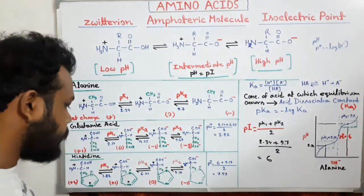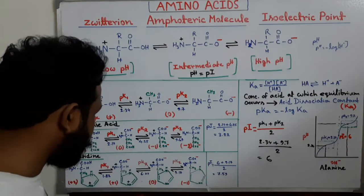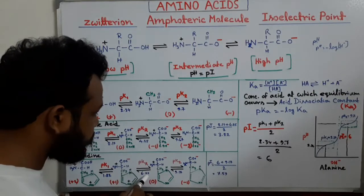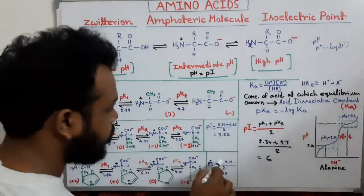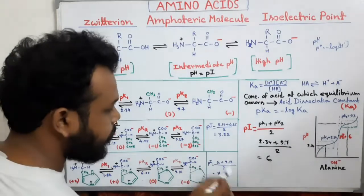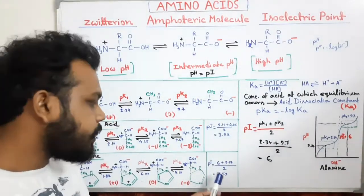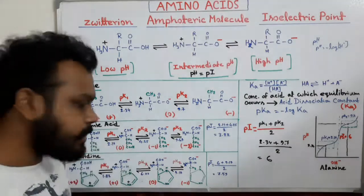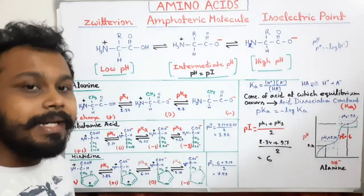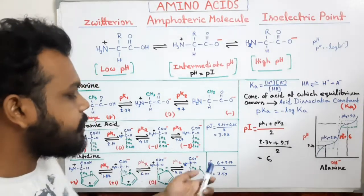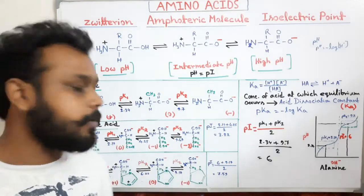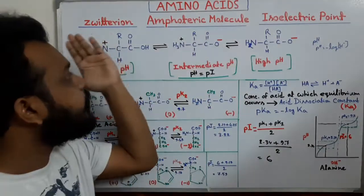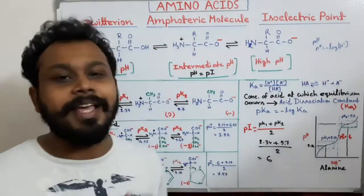To calculate the isoelectric point of histidine, we identify the zwitterionic structure and average the flanking pKa values: (pKR + pK2) / 2 = (6 + 9.17) / 2 = 7.59. So at pH 7.59 the zwitterionic state of histidine is reached with no net charge — it is electrically neutral. That pH is the isoelectric point of histidine. Thank you for watching this video.